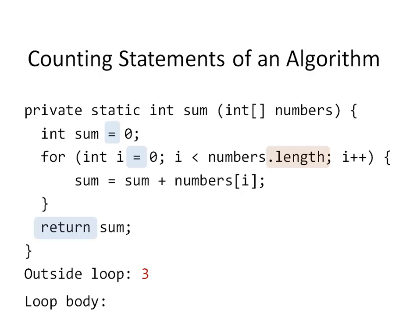And then, we are going to count the steps that are repeated over and over again. Those are the steps in the body of the loop. We start by accessing the attribute length, comparing to the control variable, accessing the array element on the given index, adding it to the sum, assigning it to the sum, and incrementing the control variable. All together, that makes 6 steps.